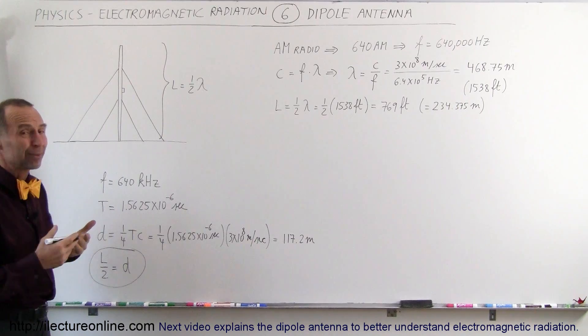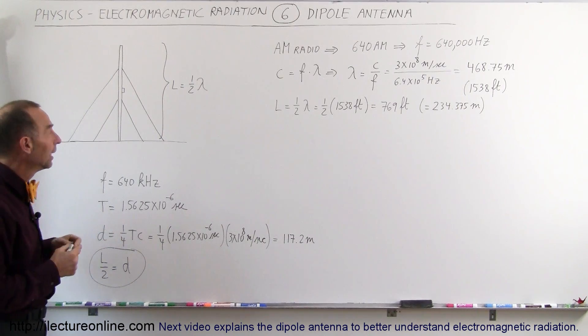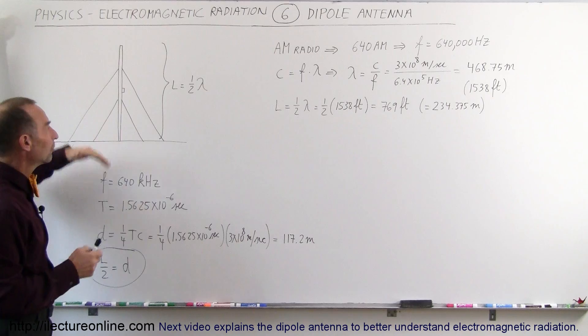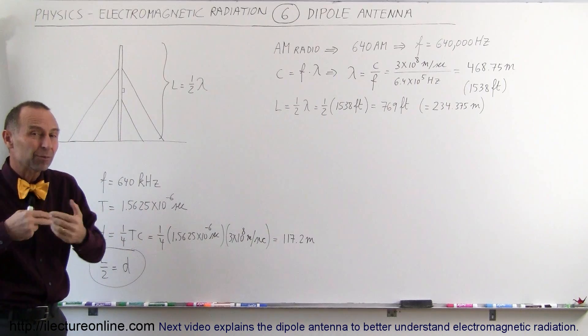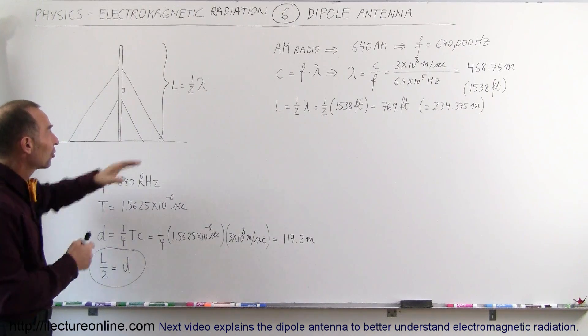You've probably seen those very tall antenna towers. They're several hundred feet, sometimes many hundreds of feet tall. And the reason why they need to be that tall is because the length of that antenna must be somehow a fraction of the wavelength.